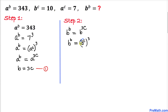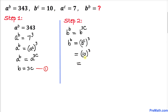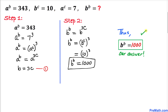Now let's focus on b power c. We know from the second equation that b power c equals 10. So I am going to replace b power c by 10, giving us 10 power 3. And 10 power 3 is 10 times 10 times 10, which is 1000. So b power b turns out to be equal to 1000. That's our answer.